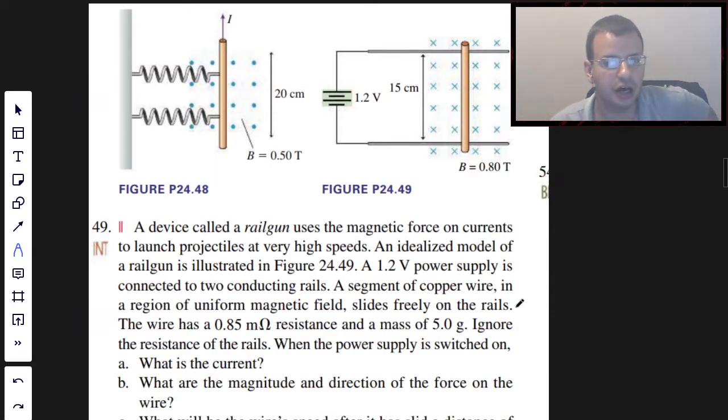It uses magnetic force on currents to launch projectiles at very high speeds. An idealized model of a rail gun is illustrated in Figure 24.49. A 1.2 volt power supply is connected to two conducting rails.